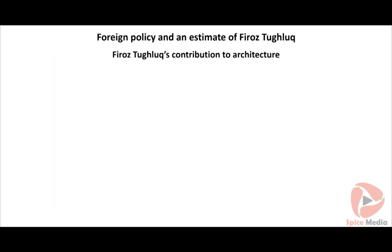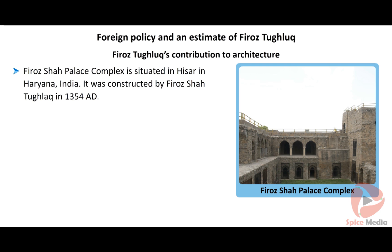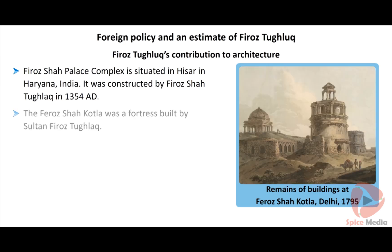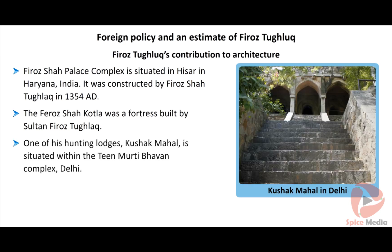Firoz Tughlaq's Contribution to Architecture: Firoz Shah Palace Complex is situated in Hisar in Haryana, India, constructed by Firoz Shah Tughlaq in 1354 AD. The Firoz Shah Kotla was a fortress built by Sultan Firoz Tughlaq. One of his hunting lodges, Kushak Mahal, is situated within the Teen Murthy Bhavan complex, Delhi.